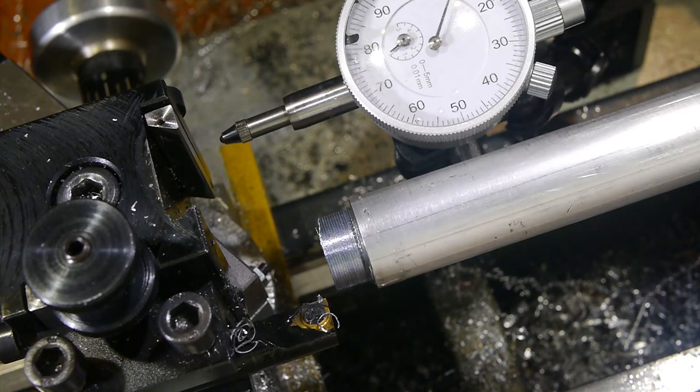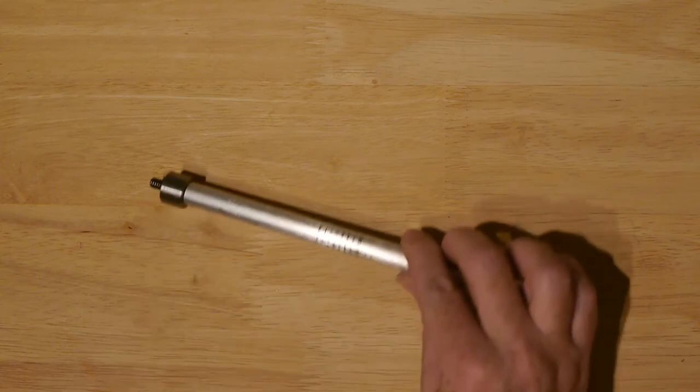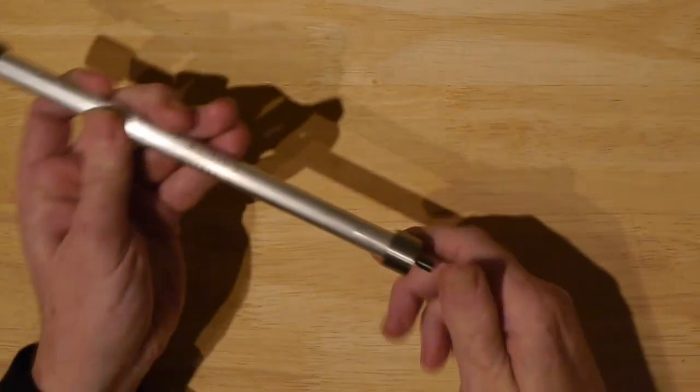The ends of the tubes were essentially identical, so I machined the other end off camera. All the parts were now complete, so all that was left was to assemble them.